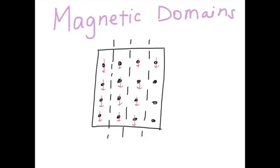That's how objects become magnetic. An example of ferromagnetic materials would be iron, cobalt, and nickel.